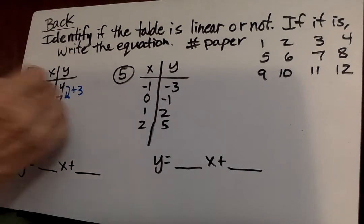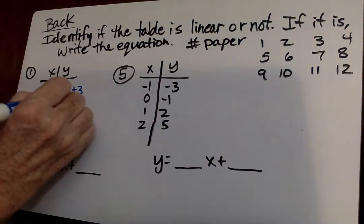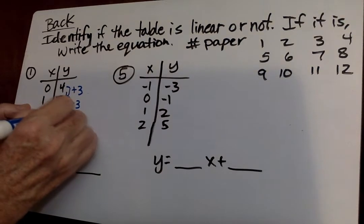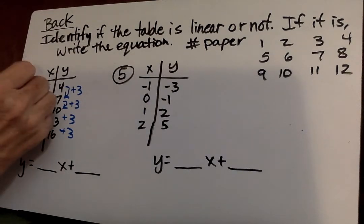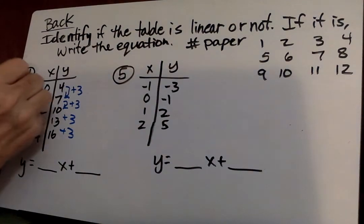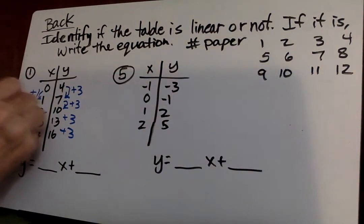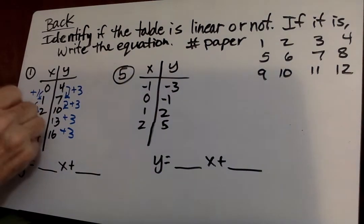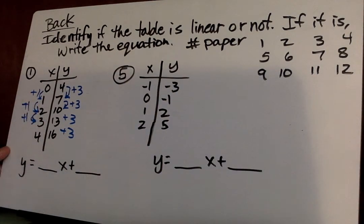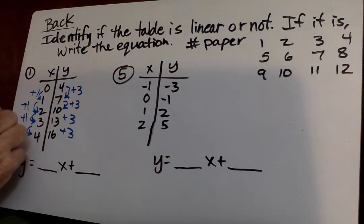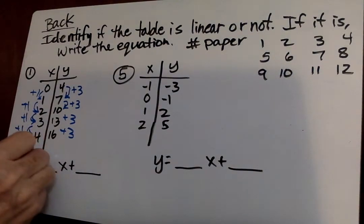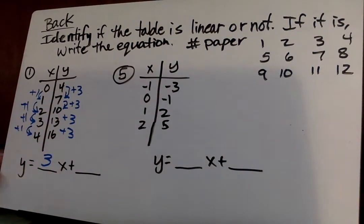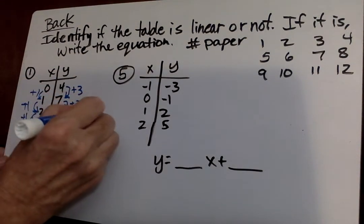So to get from 4 to 7, I add 3. 7 to 10, I add 3, and add 3, and add 3. So each of these, I've added 3. Now if I add the same number this way, the rate of change will be the same. So 0 to 1, I add 1. 1 to 2, add 1. 2 to 3, add 1. So I'm adding 1 each time. And I put this number divided by that number to get my rate of change, and that's going to be 3. And since it's 3 over 1, and we simplify that to 3.